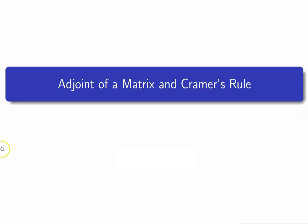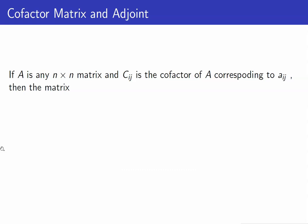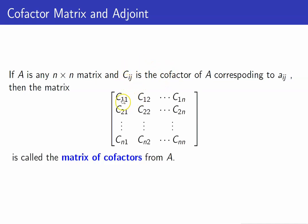In this lesson, I am going to discuss adjoint of a matrix and Cramer's rule. Suppose that we have an n by n matrix and C_ij is the cofactor of A corresponding to A_ij. We want to make a matrix containing all the cofactors. If we list all the cofactors — this is the cofactor corresponding to the 1-1 entry, corresponding to the 1-2 entry, and so on — this matrix is what you call the matrix of cofactors from A.